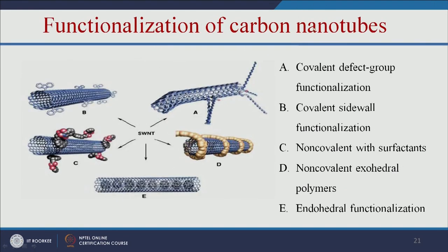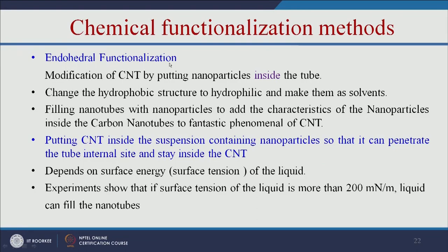How do we functionalize carbon nanotubes? There are various approaches: covalent defect group functionalization, covalent side-wall functionalization, non-covalent functionalization with surfactants, non-covalent exohedral functionalization with polymers, and endohedral functionalization. In endohedral functionalization, modification of CNT is done by putting nanoparticles inside the tube. The CNT is incubated in a suspension containing nanoparticles so they penetrate and stay inside the tube. Endohedral functionalization depends on the surface tension of the liquid; if the surface tension is more than 200, the liquid can fill the nanotubes.